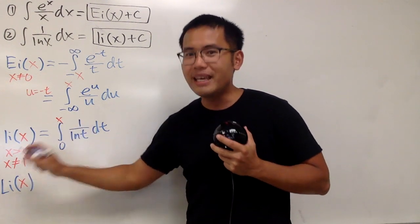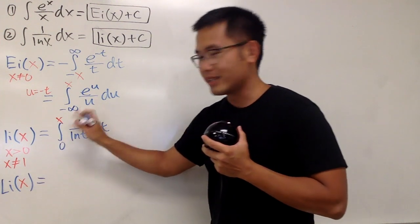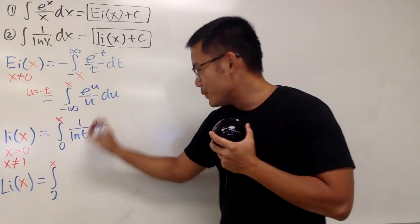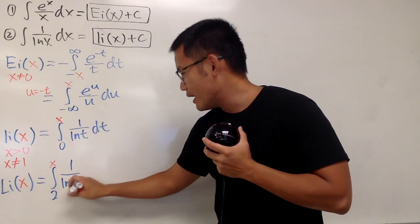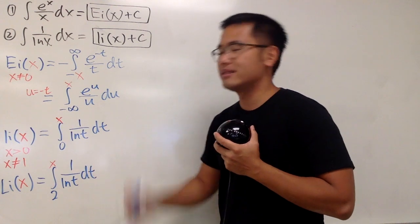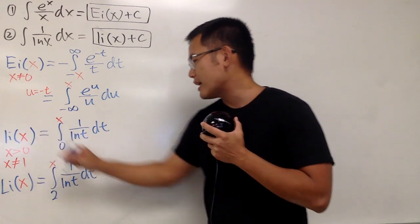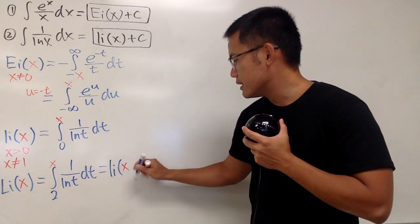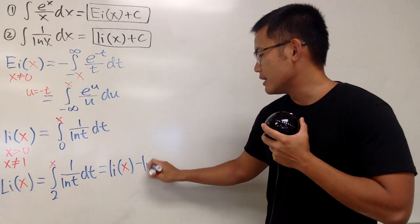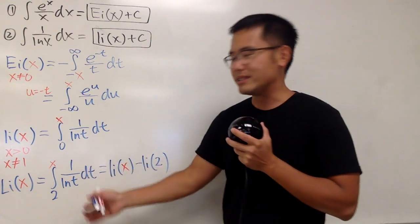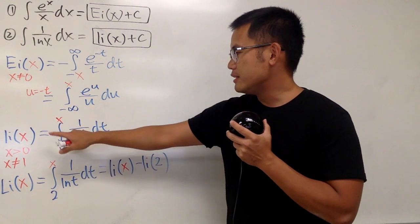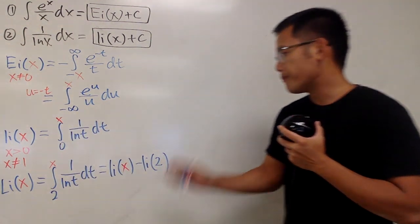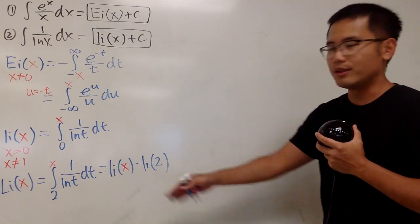Anyway, the big brother, the big Li(x), is defined to be, let's just avoid that situation. So we start at 2, and then we go to x, like this. And we have 1 over ln(t) dt, like this, as well. And a really cool connection between this and that is just that big Li(x) is the same as li(x), this is the little version, and then minus li(2). And of course, you can see pretty easily, because little li(x) goes from 0 to x, and this big Li(x) goes from 2 to x.